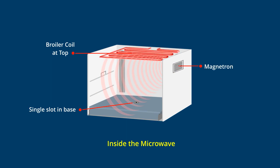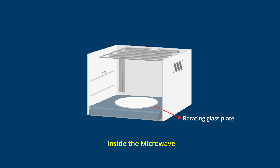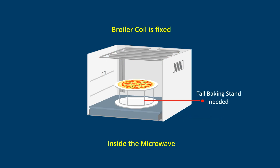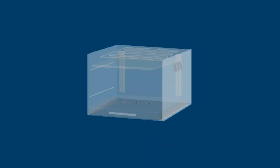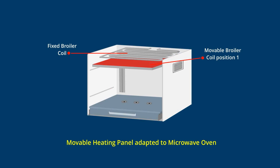A rotating glass plate fits on the rotating slot, on which food holders and trays are kept. To grill food items, a tall baking stand sometimes becomes necessary to reduce the gap between the broiler coil and food item. In the multifunctional oven adaptation to the microwave oven, a single movable heating panel is added below the fixed broiler coil.